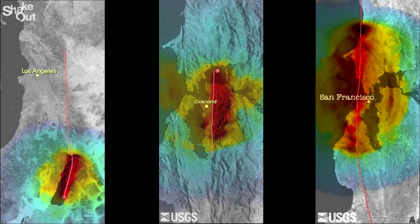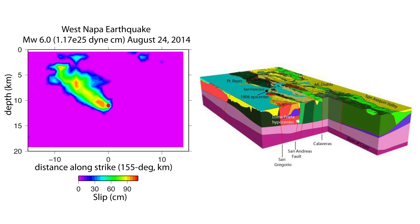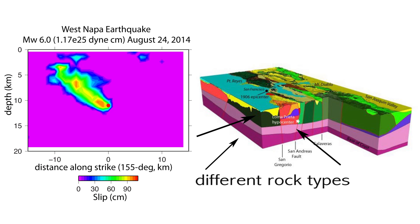We need to know the location of the earthquake, its magnitude, the length of the rupture, and the distribution of slip along the fault. The model must also take into account how the earthquake waves move through the 3D geological structure in the area.